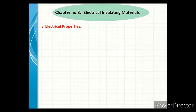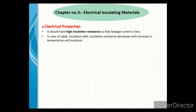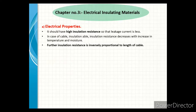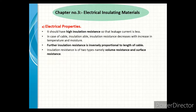First, we see the electrical property. It should have high insulation resistance so that leakage current is less. In case of cable, insulation resistance decreases with increase in temperature and moisture. Further, insulation resistance is inversely proportional to the length of cable. Insulation resistance is of two types: volume resistance and surface resistance.